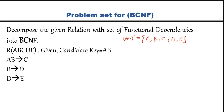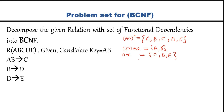Now we compute the prime attributes. In this case, only A and B are prime attributes. Non-prime attributes are the remaining ones: C, D, and E. Now we check for partial dependency, which is needed for 2NF, and we will check for transitive dependency afterwards.